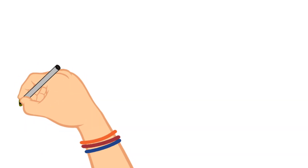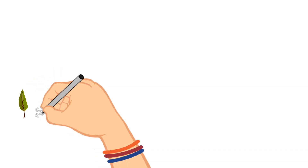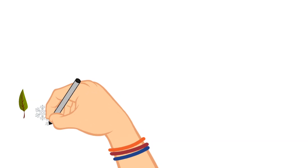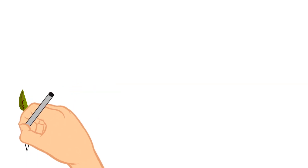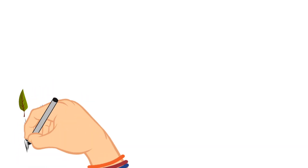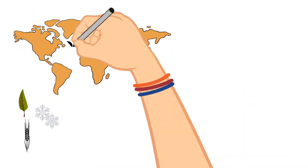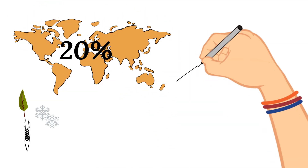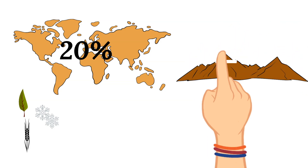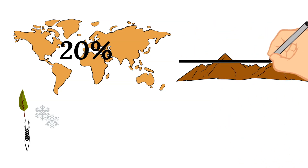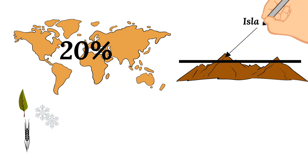Some fun facts about mountains: mountains can be home to many different types of biome because they span such a great difference in altitude — so it can be a forest, tundra, or even a grassland. Around 20% of the earth's surface is covered with mountains, and this includes mountains and mountain ranges that appear in the ocean as well. Surprisingly, many islands are actually just the tops of mountains coming up over the water.